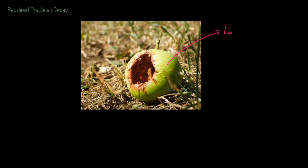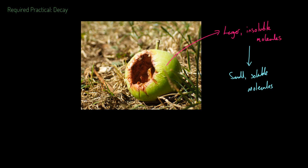Let's talk about the required practical about decay. There are organic molecules in the world, like the ones that make up this apple. They tend to be larger, more insoluble molecules — like the cellulose that makes up most plants. These need to be decayed into small, soluble molecules so they can be taken up by plants and the whole cycle can go around again.